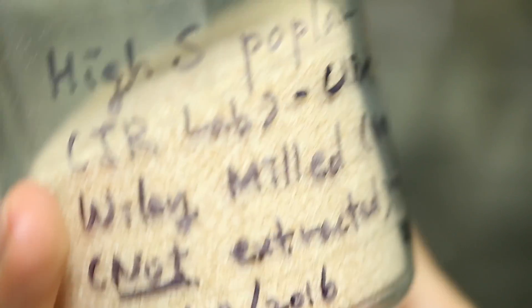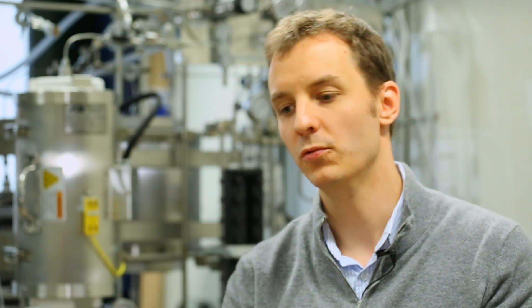We start with a non-edible plant, so something like wood, and we basically treat it to extract the various fractions of the plant.